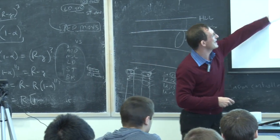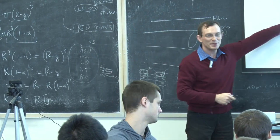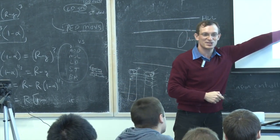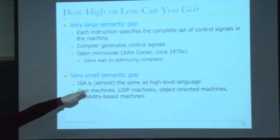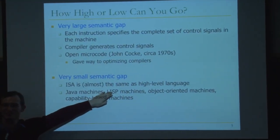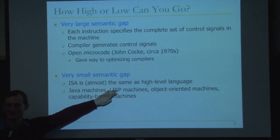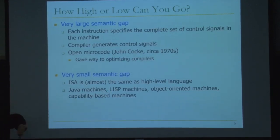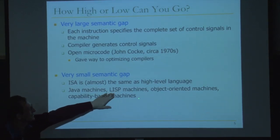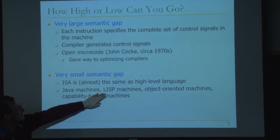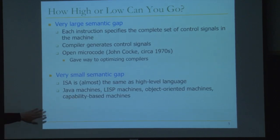You could go the other way also — a very small semantic gap, making the ISA the same as the high-level language. People have tried this: Java machines that can directly execute Java code, Lisp machines, Prolog machines. These are languages that are easy for some programmers. People have looked at developing those machines such that the compiler doesn't do a lot of work compiling those languages. Also object-oriented machines and capability-based machines. Basically, you can make the high-level language the same as your ISA.